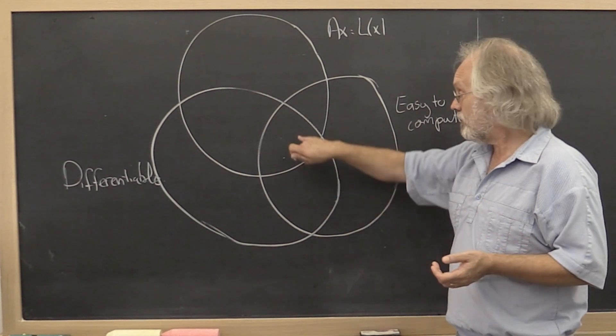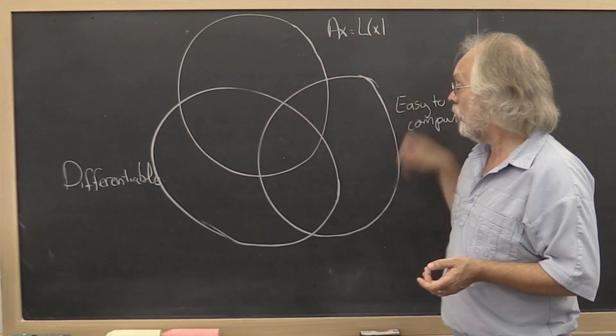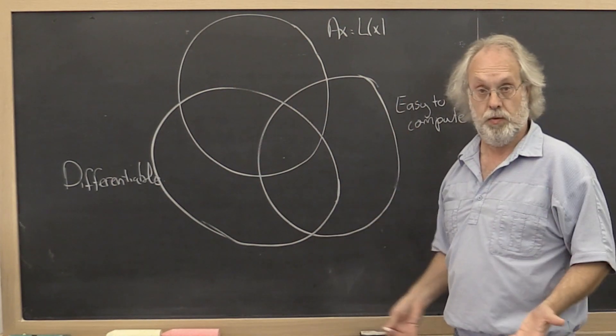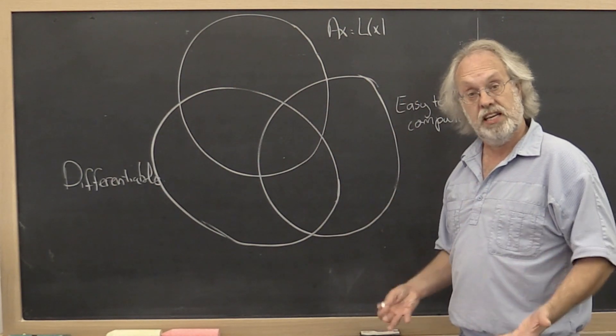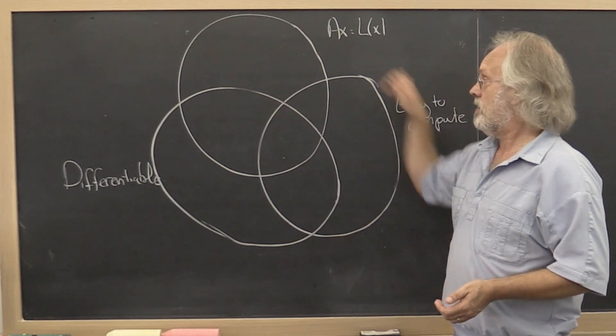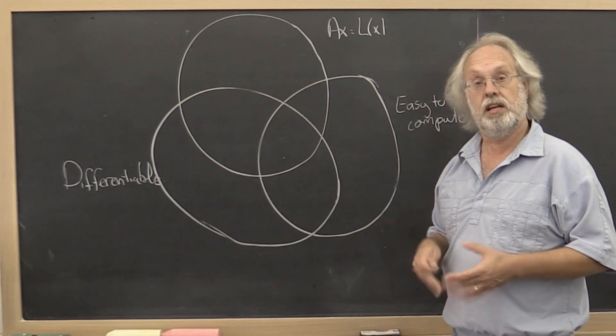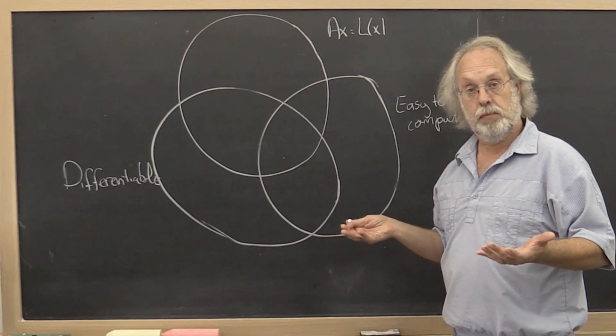It'd be nice if there was one matrix norm that has all of these nice properties so we could just use it and have it over with. The problem is there is no norm that has all of these nice properties. At least not in the general case of an m by n matrix.